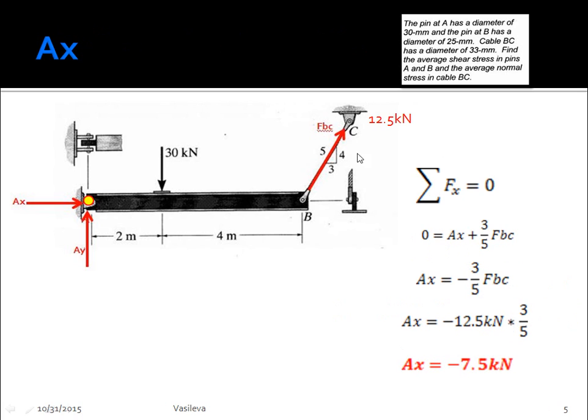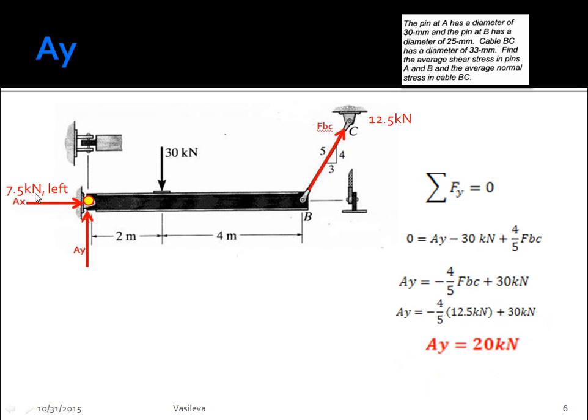So now that we know FBC, we move on to find AX. And we find AX by doing the sum of the forces in the X direction. This should be pretty easy because you only have AX and the cosine component of FBC. So you get AX equals negative 7.5 kilonewtons. Because it's negative 7.5, it means that it will actually be pointing to the left. But I'm just going to keep it like this, write my value and then say left so that I remember.